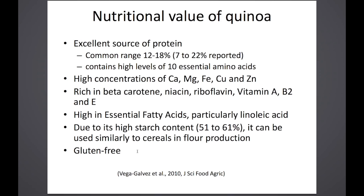Quinoa has high concentrations of calcium, magnesium, iron, copper, and zinc. It's very rich in beta-carotene and also rich in niacin, riboflavin, and several vitamins. It's high in essential fatty acids, particularly linoleic acid. Due to its high starch content, it can be used very similarly to cereals in flour production. We also test different varieties for processing suitability, including extrusion. One of the most interesting aspects is that quinoa is gluten-free, making it an excellent alternative to wheat for people with celiac disease or gluten allergies.